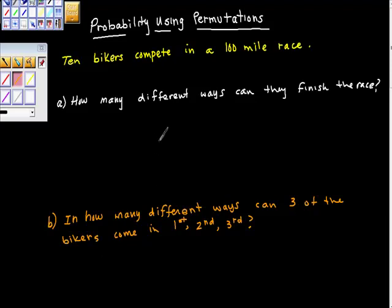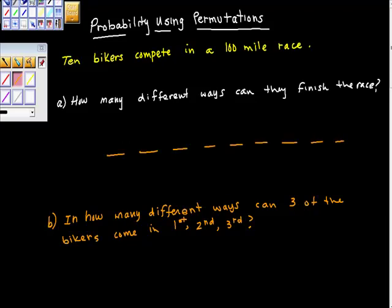Here we have 10 bikers who compete in a hundred-mile race, and the question is: how many different ways can they finish the race? Well, they're going to finish one through ten — assuming there are no ties and assuming that they're all equally likely to win at the beginning.